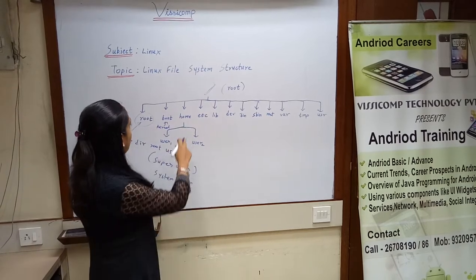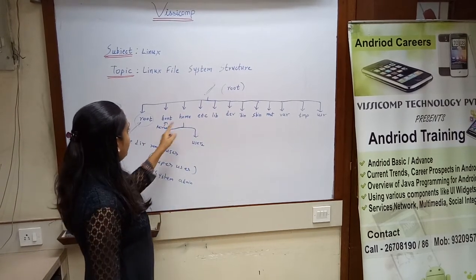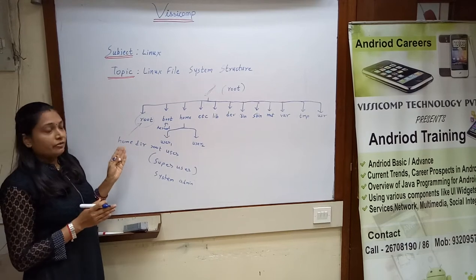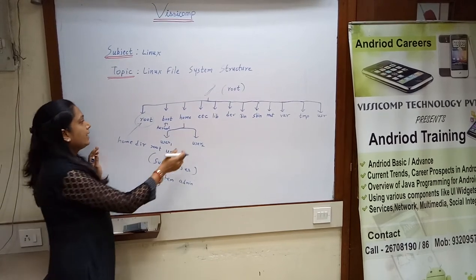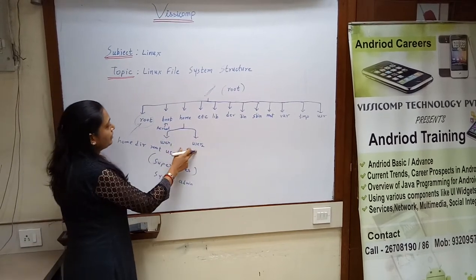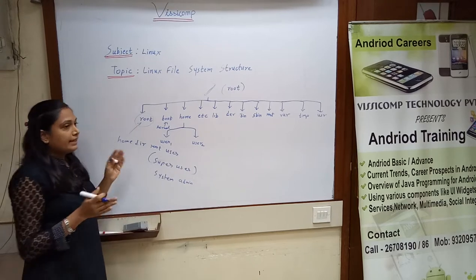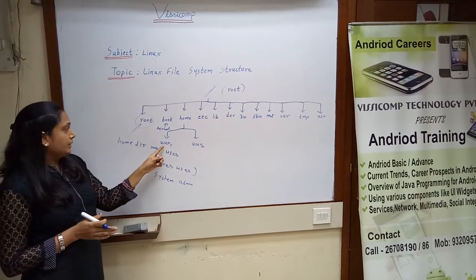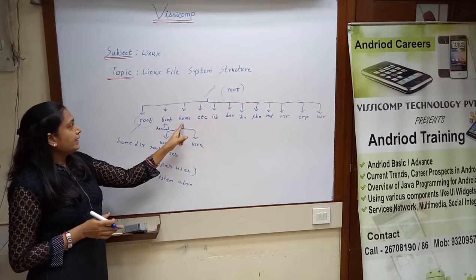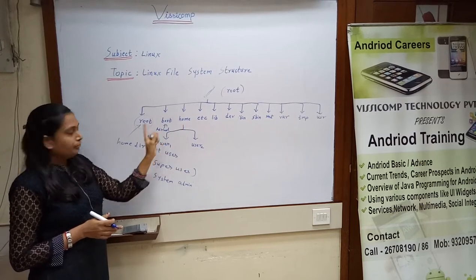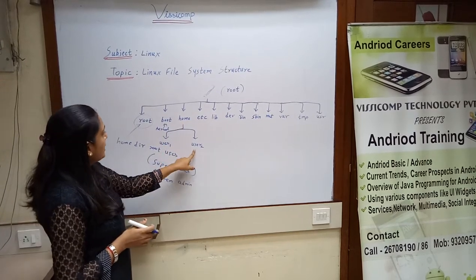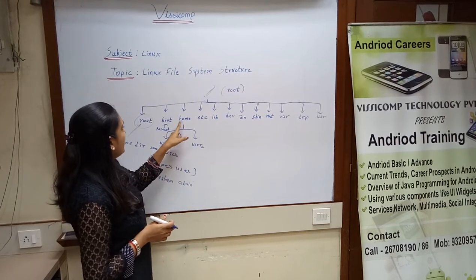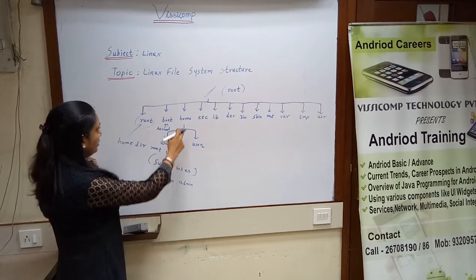Third is the home directory. The home directory is where all users are kept. For example, if I add a user — suppose user one — it goes into the home directory. If I create another user, that folder also goes into the home directory.